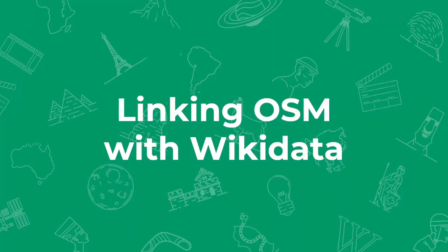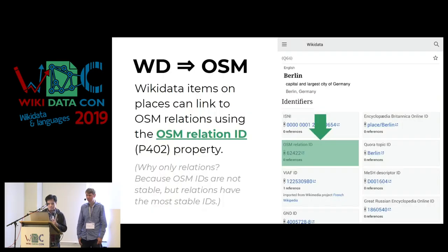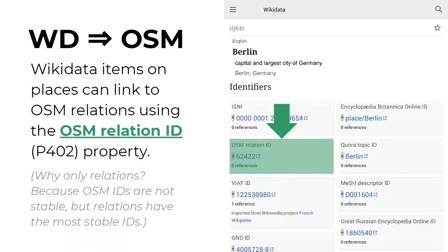So I've given an introduction of what OpenStreetMap is. We'd love to discuss it more, but we don't have enough time. So we'll go into how we link OpenStreetMap and Wikidata together. From Wikidata to OpenStreetMap, Wikidata items on places can link to OpenStreetMap relations using the OSM relation ID, or the P402 property.